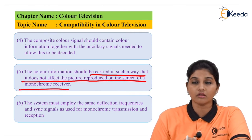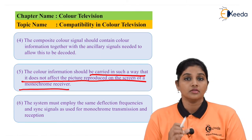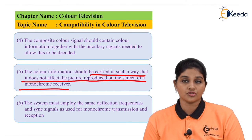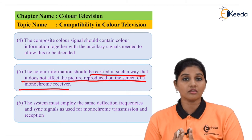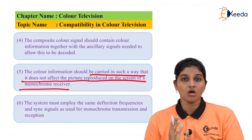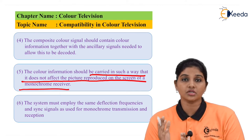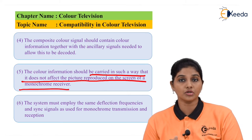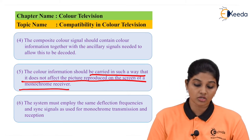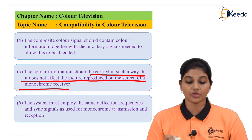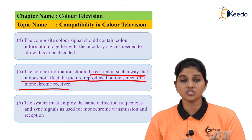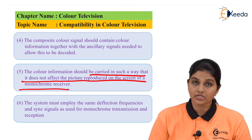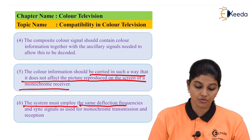The color information should be carried in such a way that it does not affect the picture reproduced on the monochrome receiver screen. In color television, the spectrum space that was unused in monochrome television is used for carrying the color subcarrier frequency. If the color information is transmitted separately, it can be displayed on a monochrome TV receiver as a black and white signal without any interference.